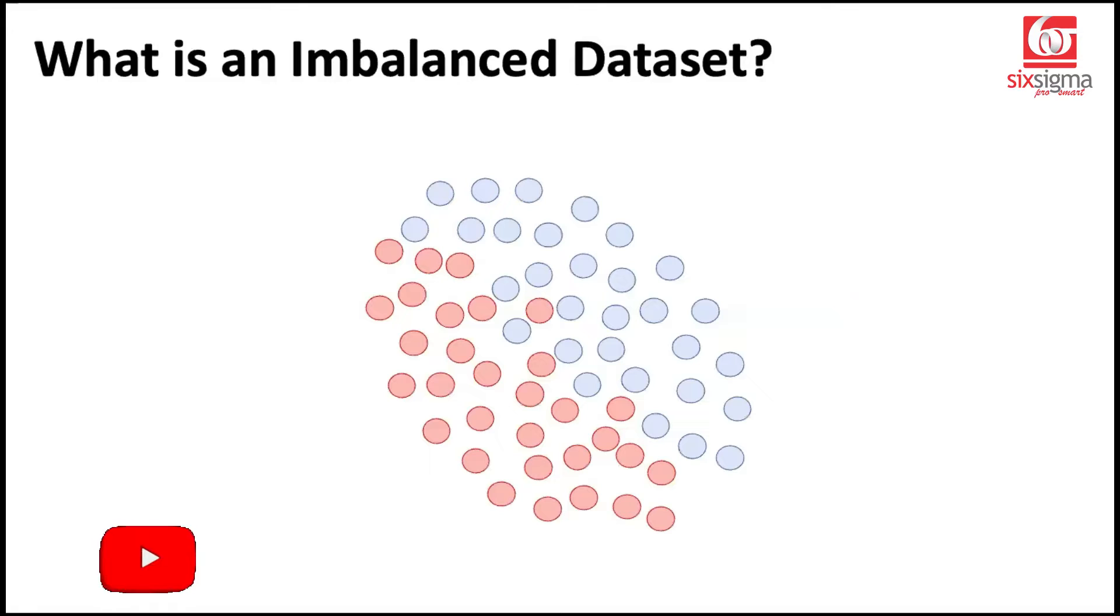So let's understand what is an imbalanced dataset. The representation on the screen that you see right now has two classes. You're talking about classification, so you have to segregate the reds from the blues. And you see a roughly equal representation of reds and blues on this one, which means you're giving equal emphasis to both the classes and that's how your data is.